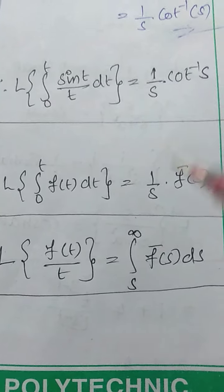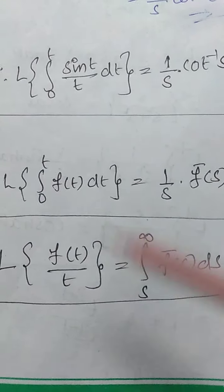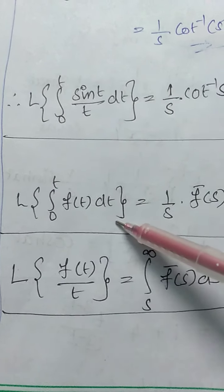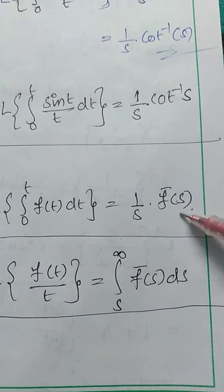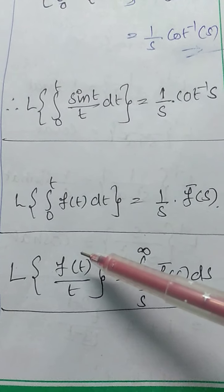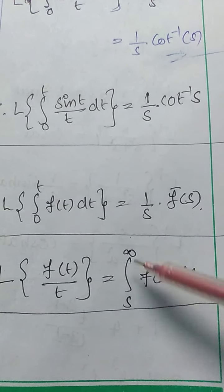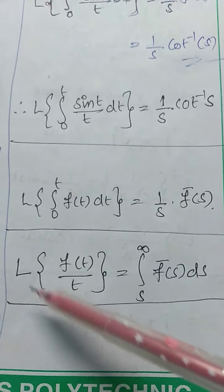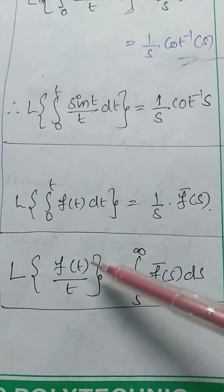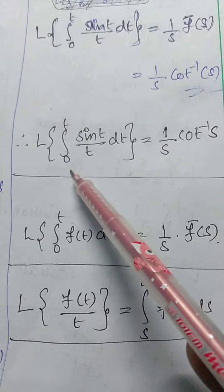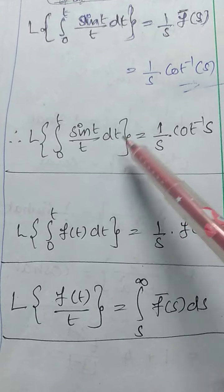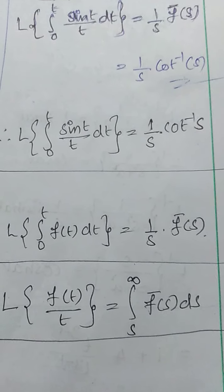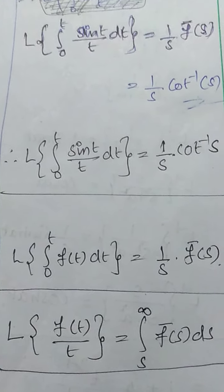In this problem we applied two formulas: first, L{∫₀ᵗ f(t) dt} = (1/s)·F̄(s), the Laplace transform of an integral; second, L{f(t)/t} = ∫ₛ^∞ F̄(s) ds, the Laplace transform of division by t. Therefore, the Laplace transform of ∫₀ᵗ (sin t / t) dt equals (1/s)·cot⁻¹(s). Prepare very well, thank you.